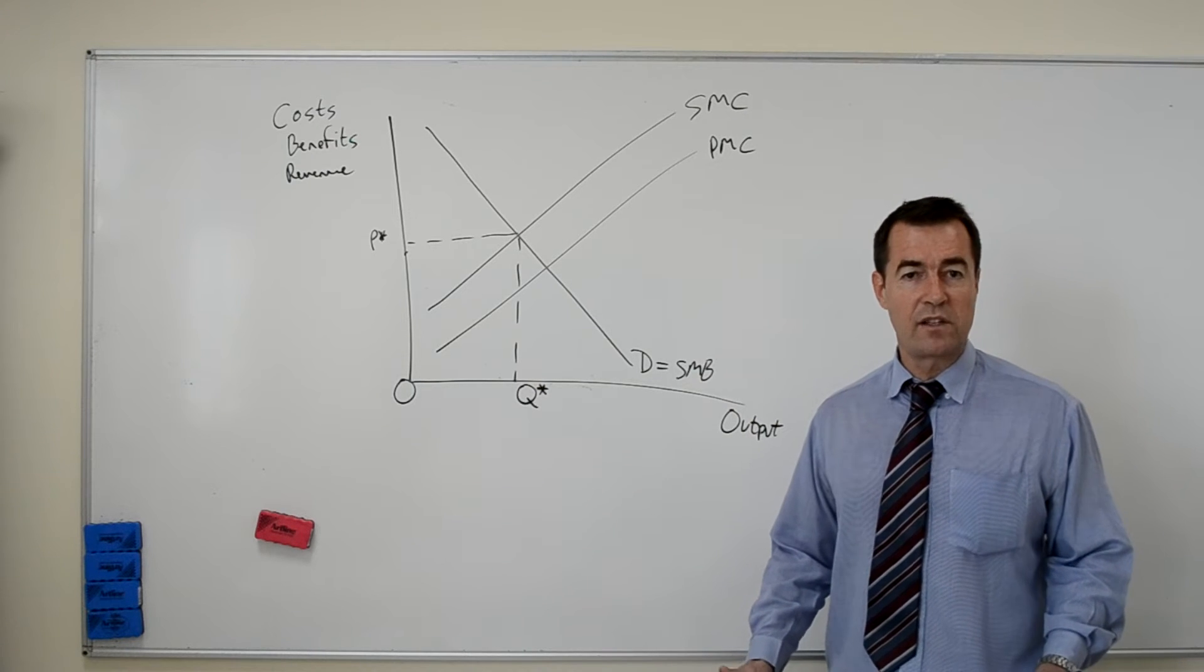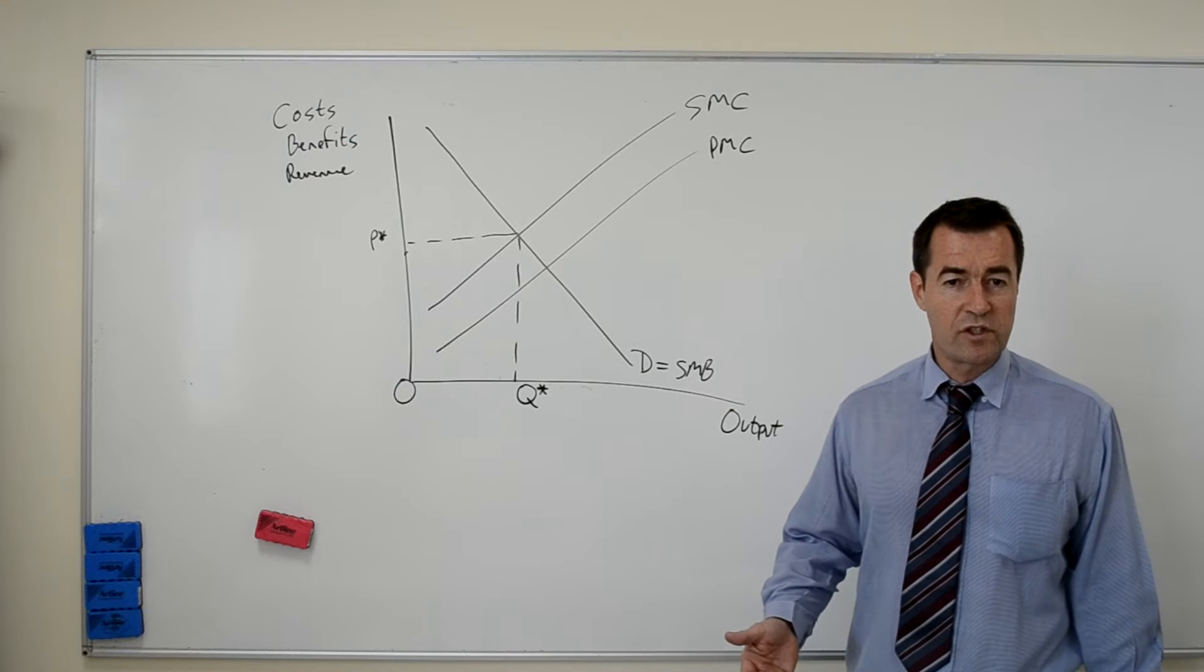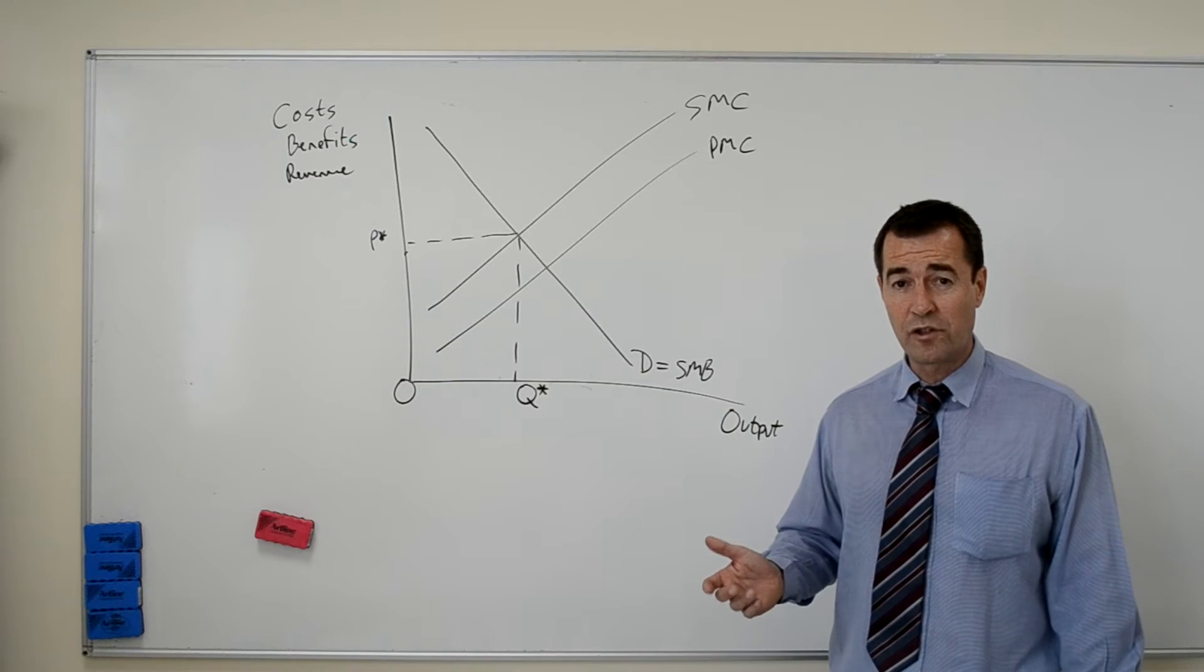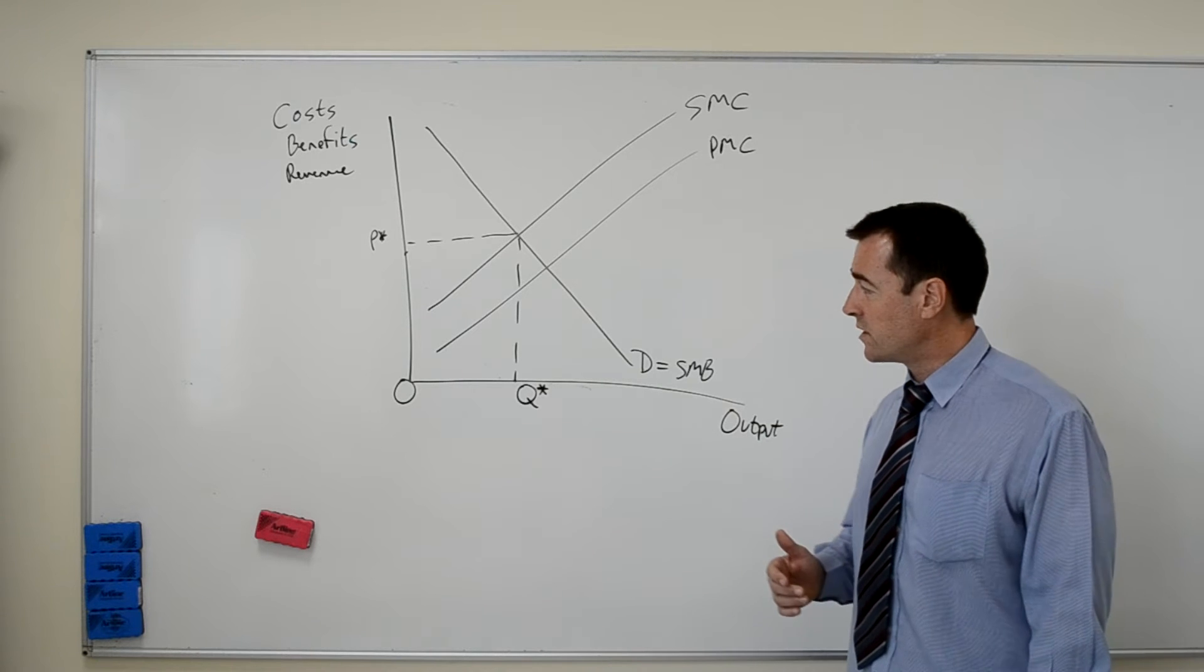We're looking at negative externalities arising in production, the government response to it, and how this is affected if the market structure is not perfectly competitive, but in this case it's a monopoly.